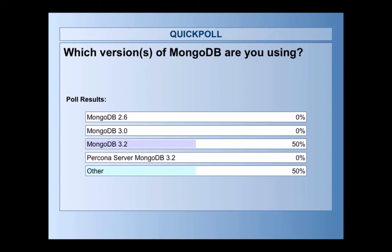Art notes that the 'other' category is interesting — he would have expected some 2.6 users still. A lot of 3.0 users have probably upgraded to 3.2 since that's an easy step, whereas 2.6 to 3.0 is a bigger jump. Thanks everyone for participating in the poll.